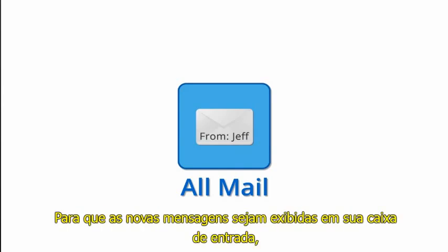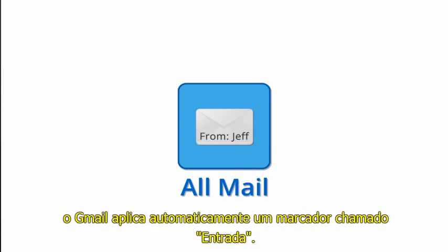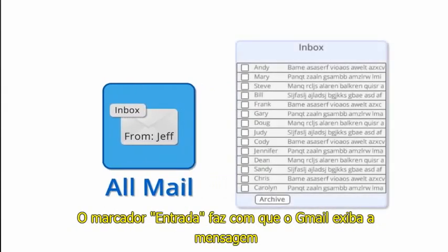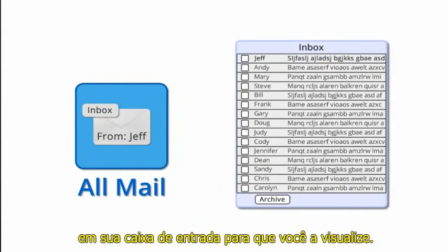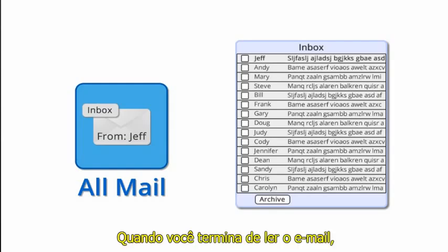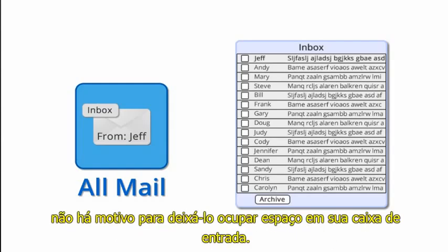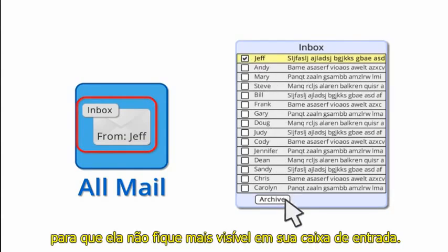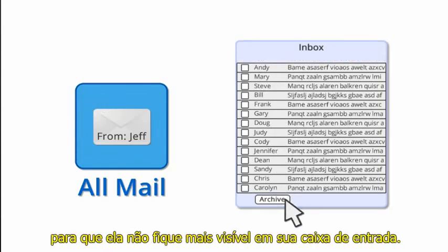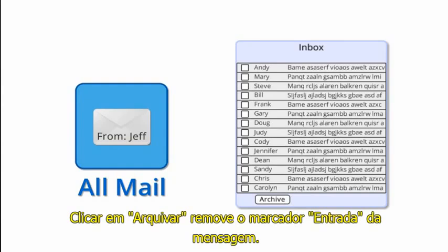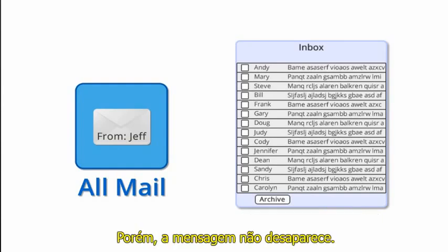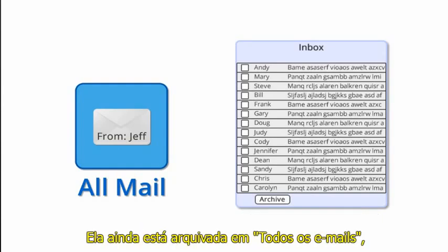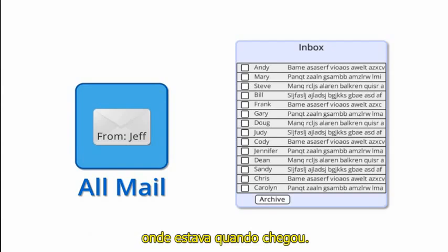In order to display the new messages in your inbox, Gmail automatically applies a label called Inbox. The Inbox label tells Gmail to display the message in your inbox so you can view it. When you're finished reading the email, there's no need to have it cluttering up your inbox. Just select the message and click the Archive button. Clicking Archive simply removes the Inbox label from the message, but the message hasn't gone anywhere — it's still in your AllMail container and will stay there until you delete it.